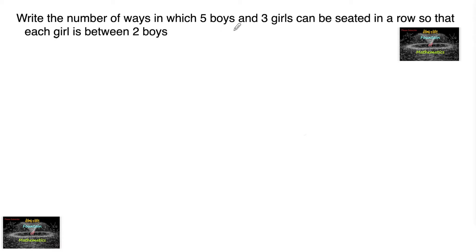Write the number of ways in which 5 boys and 3 girls can be seated in a row so that each girl is between 2 boys.